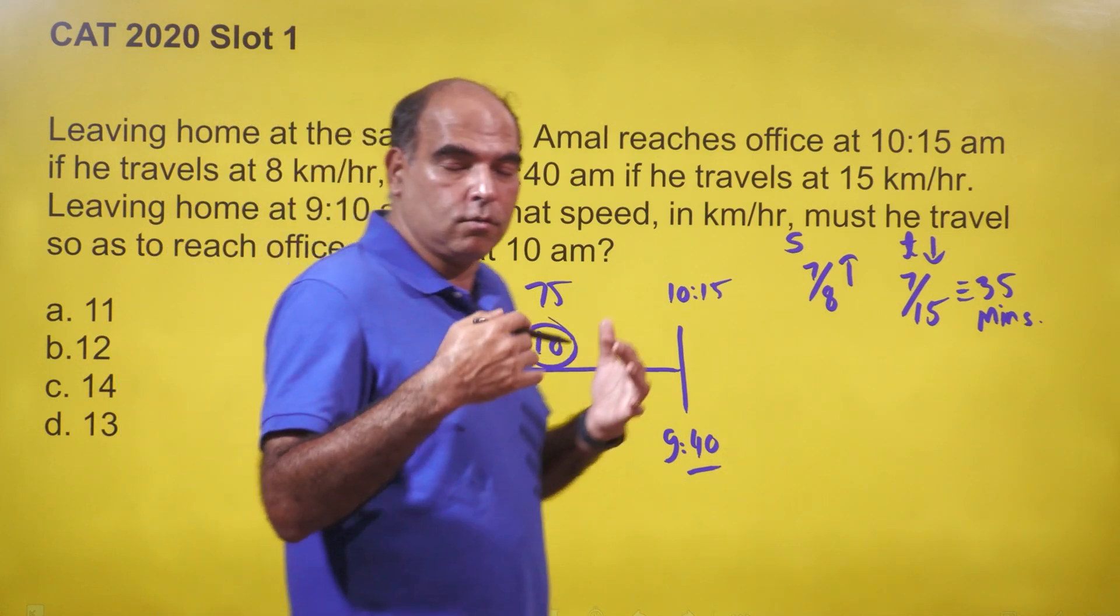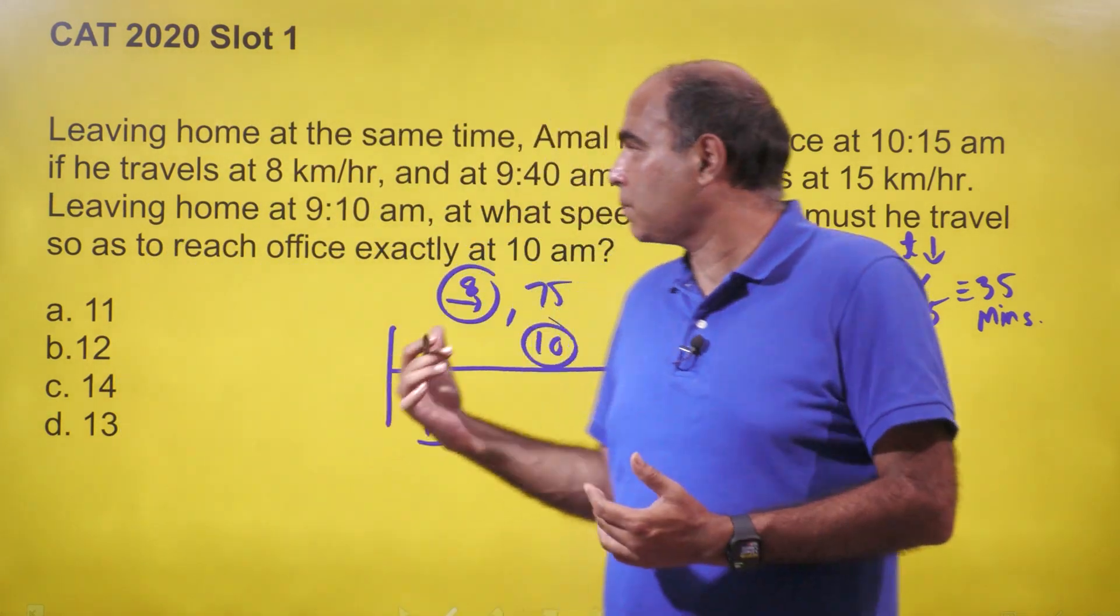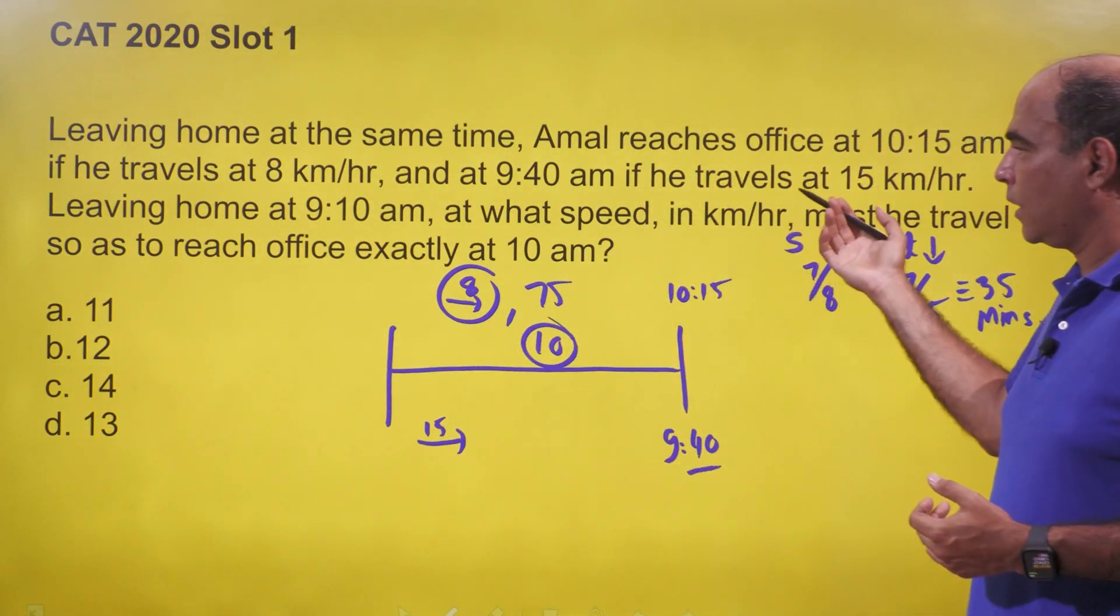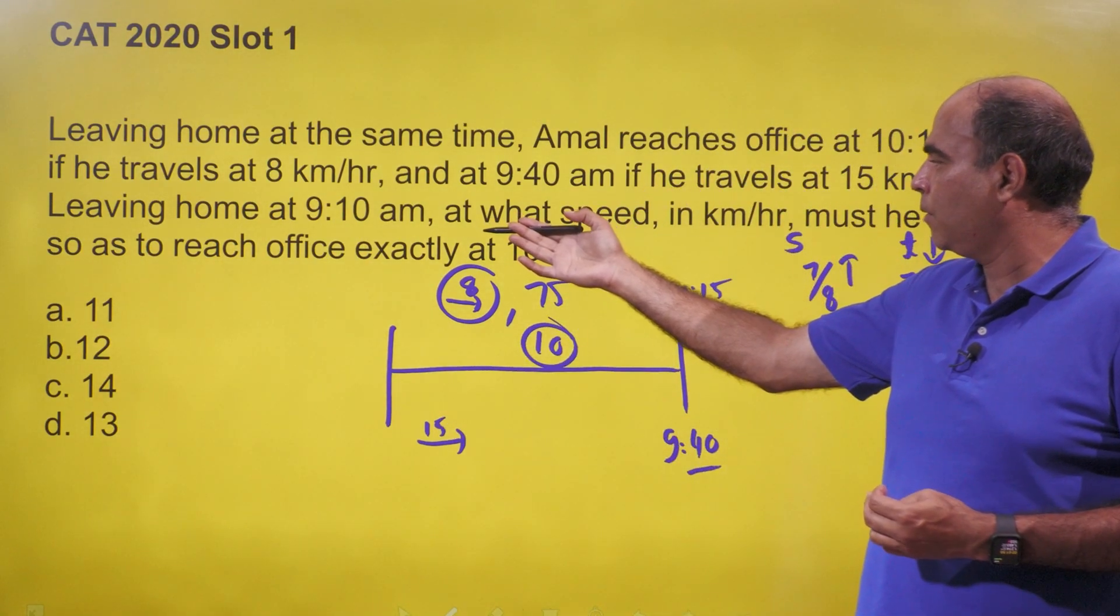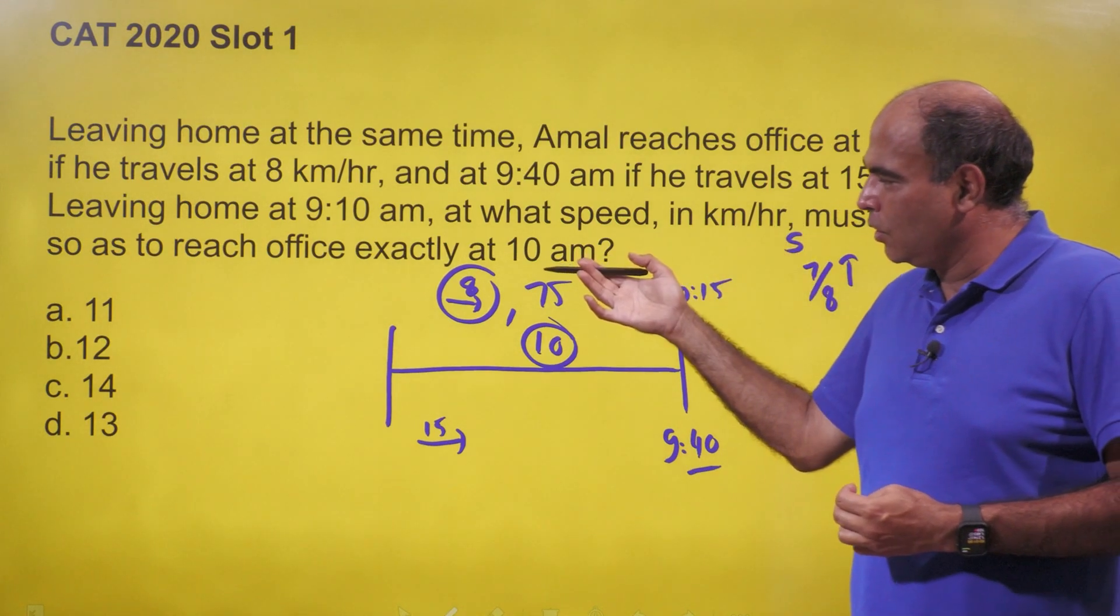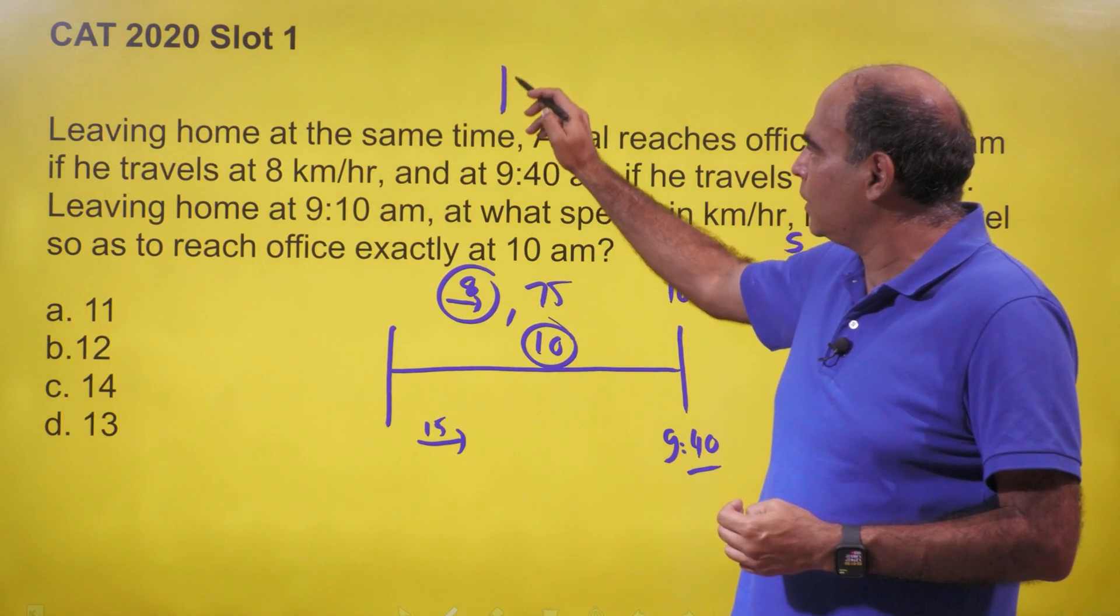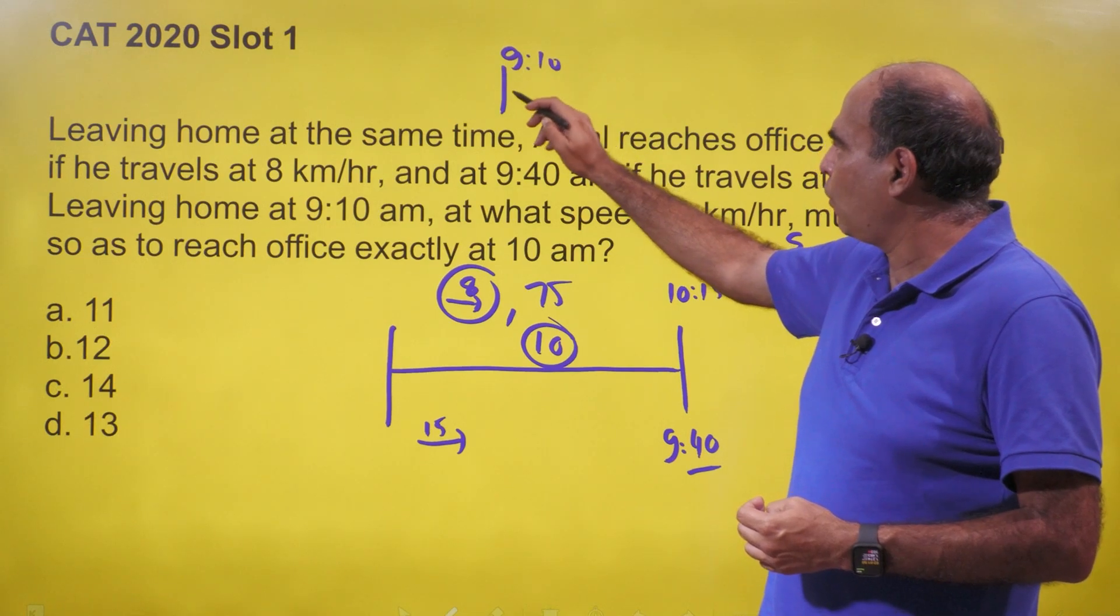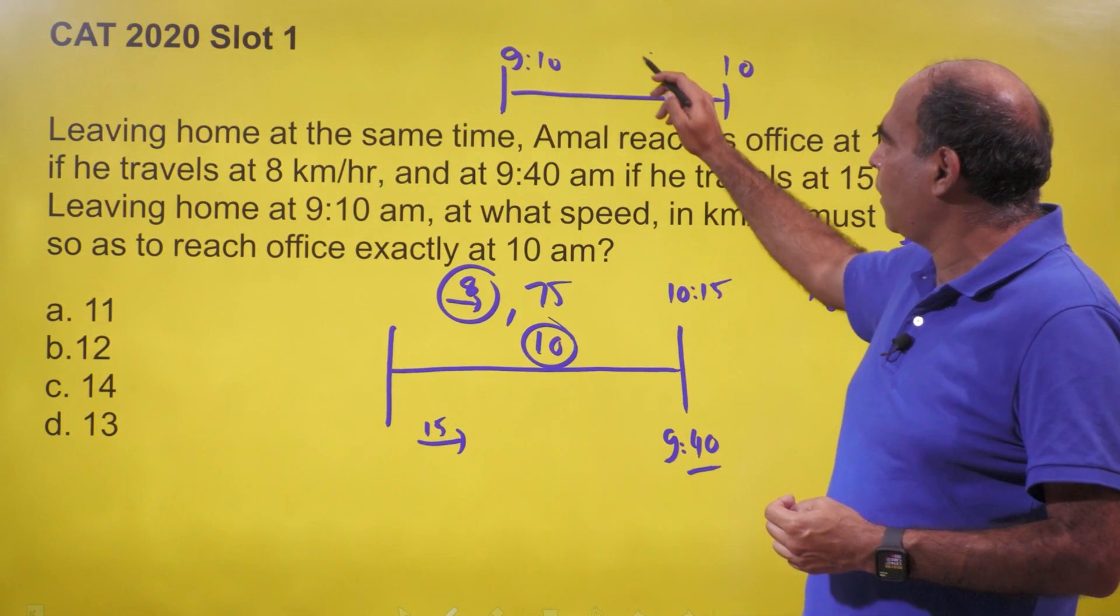At 8 km/hr, 75 minutes is a journey of 10 kilometers. So that's the calculation from this part. Then we go ahead: leaving home at 9:10 AM, at what speed in km/hr must he travel so as to reach office exactly at 10 AM? If he's leaving at 9:10 and wants to reach exactly at 10:00, he's got 50 minutes to reach.